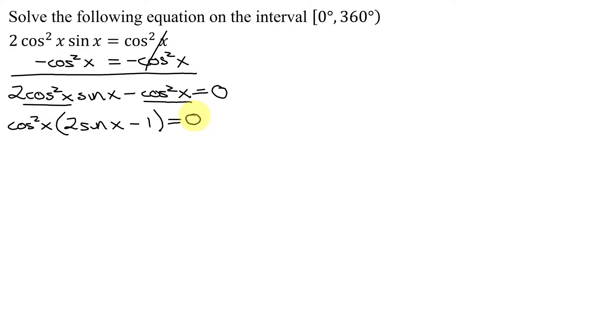So now it's factored. We set each factor equal to zero. Cosine squared x equals zero, and 2 sine x minus 1 equals zero. If cosine squared x equals zero, cosine x equals plus or minus the square root of zero, which is just zero. So the first one gives me cosine x equals zero. And the second factor, if I add one to both sides, I get 2 sine x equals positive one.